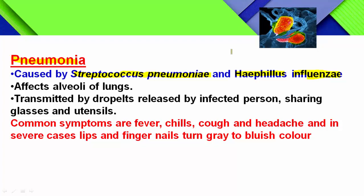Streptococcus pneumoniae is the causal organism. The organ infected during pneumonia is the alveoli of the lungs. Pneumonia is transmitted by droplets released by an infected person, and also by sharing glasses and utensils.